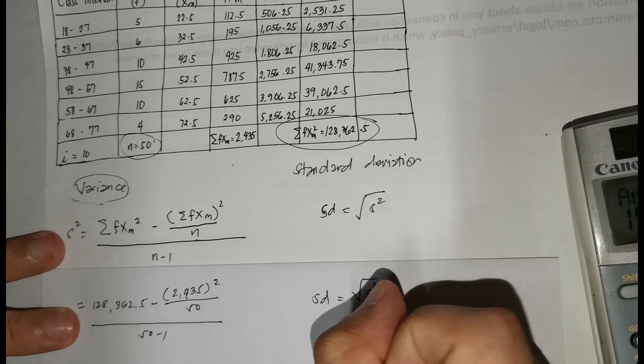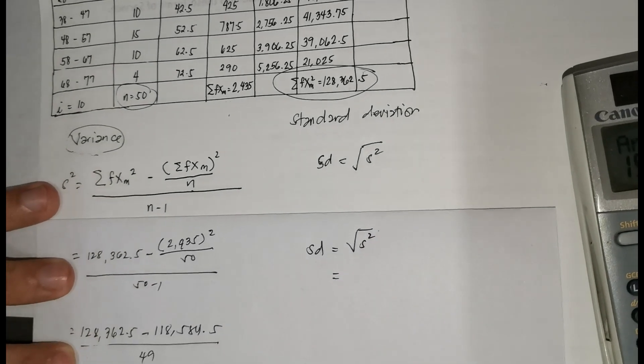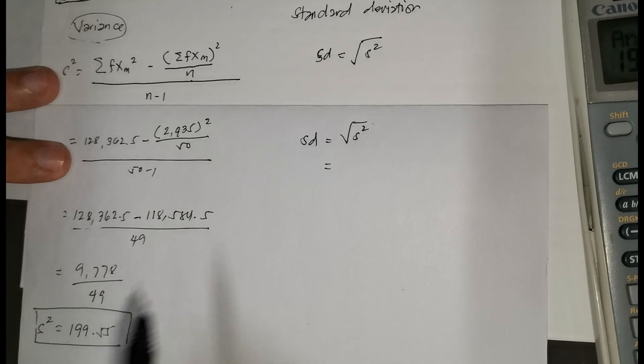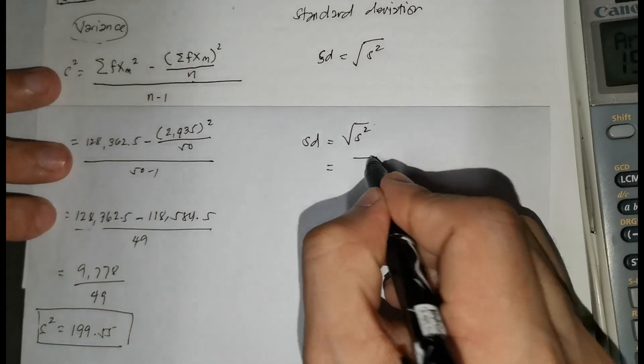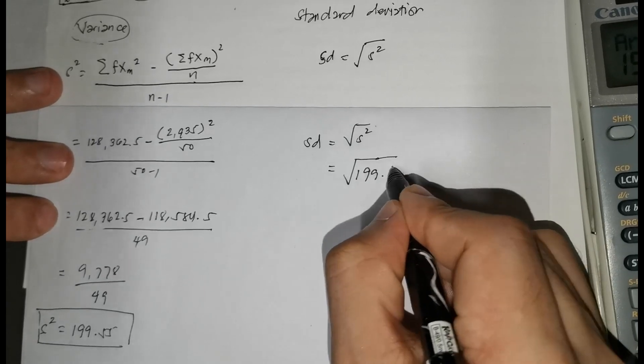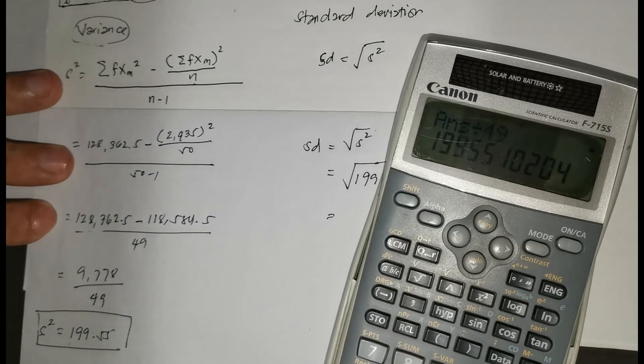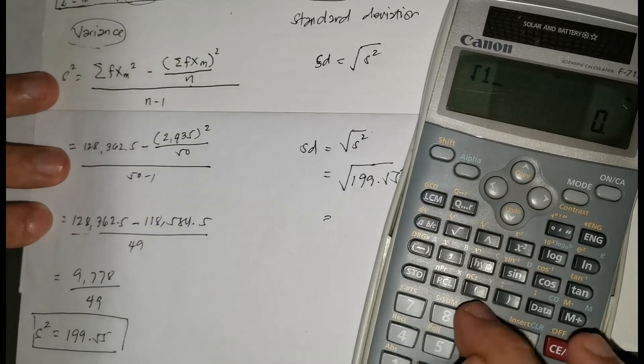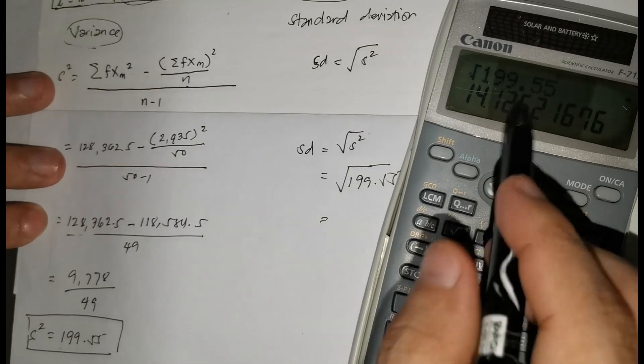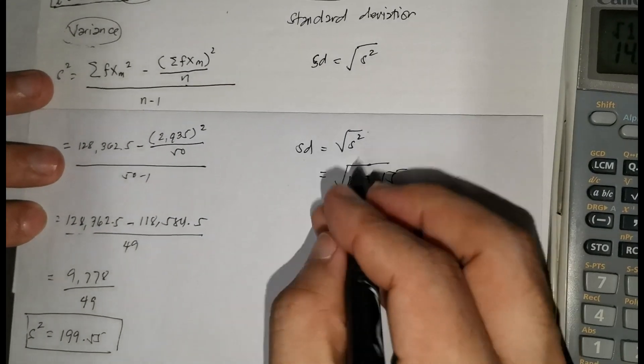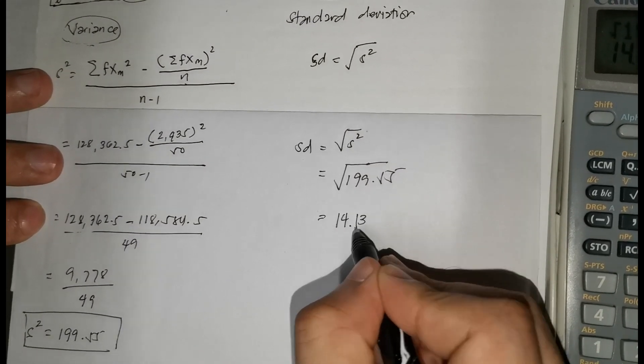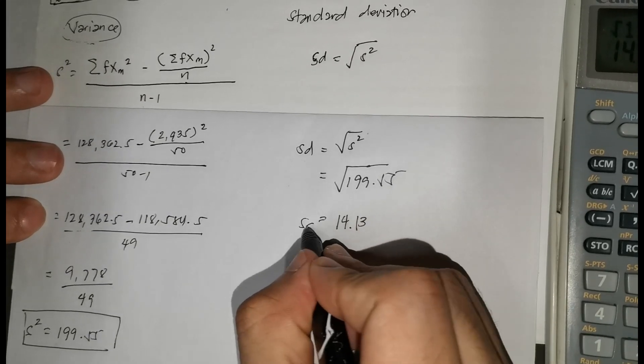Now let's solve for our standard deviation. This is the square root of our variance. Our variance is 199.55 so we'll just get its square root. Let's use our calculator: the square root of 199.55. We'll round this to two decimal places as 14.13. That is our standard deviation.